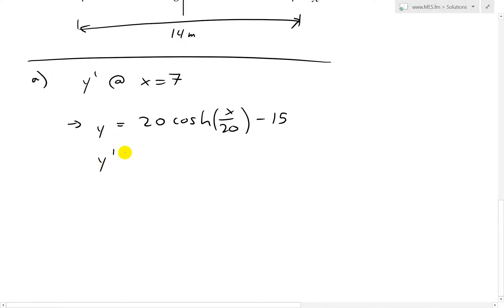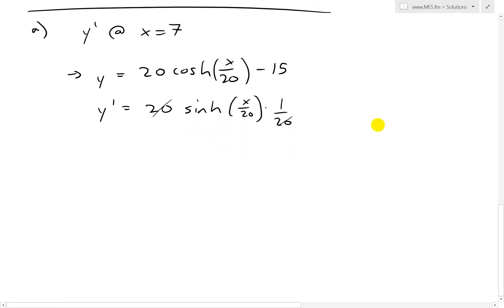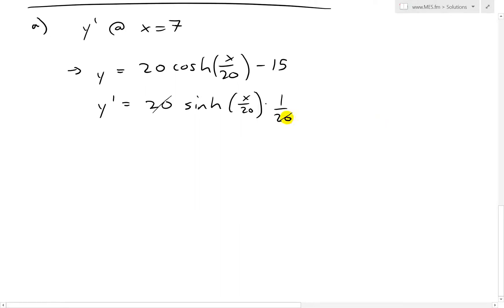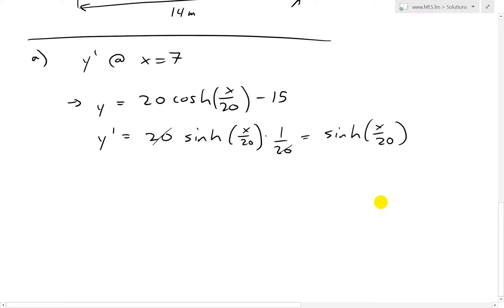And now we need to take the derivative. So derivative of cosh, recall from our earlier video that the derivative of cosh is just sinh or hyperbolic sine. So we go 20 sinh x over 20. And then using the chain rule, you need to times it by 1 over 20. So then these cancel. And the derivative of negative 15, that's just 0. So what we end up getting here is this just equals sinh x over 20.